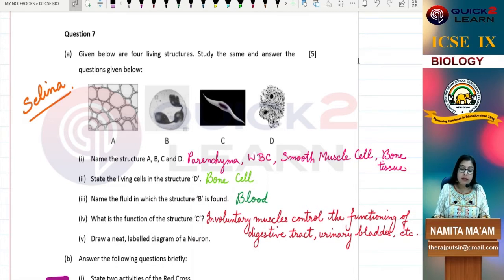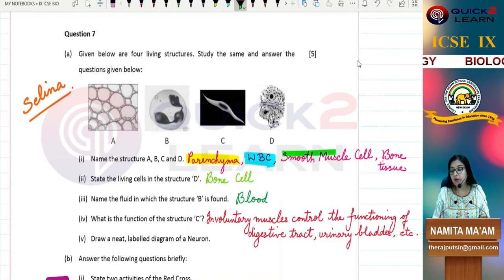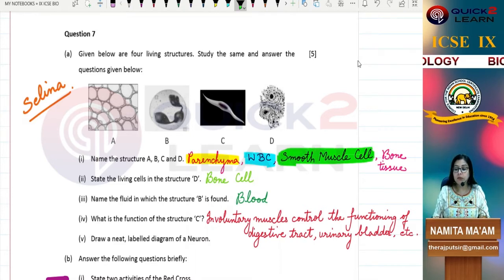Name the structures A, B, C and D. A is parenchyma. B is WBC - white blood cell or white blood corpuscle. There are three nuclei. Next is our smooth muscle cell - involuntary muscle or smooth muscle or unstriated muscle. Spindle shape. Last is our bone tissue, bone cells.